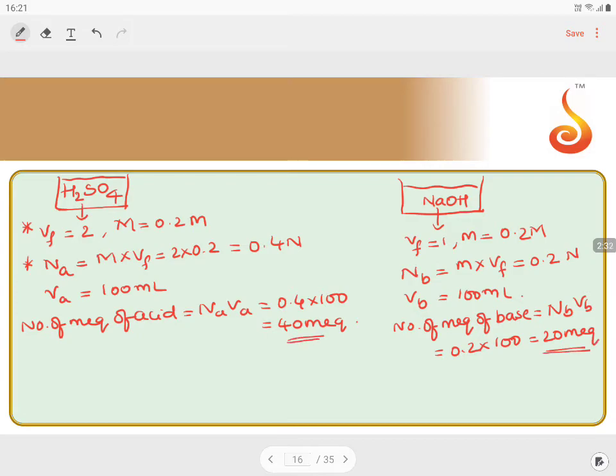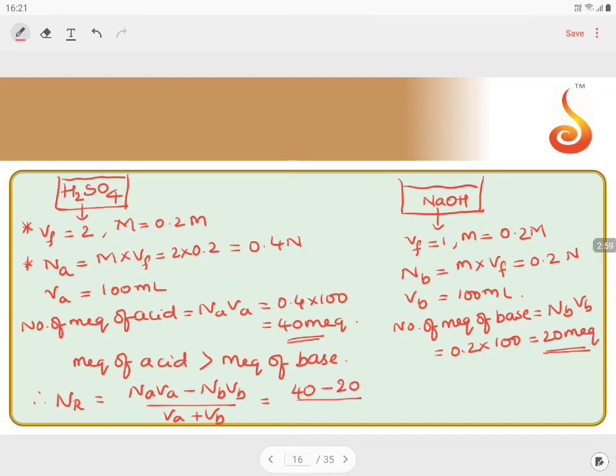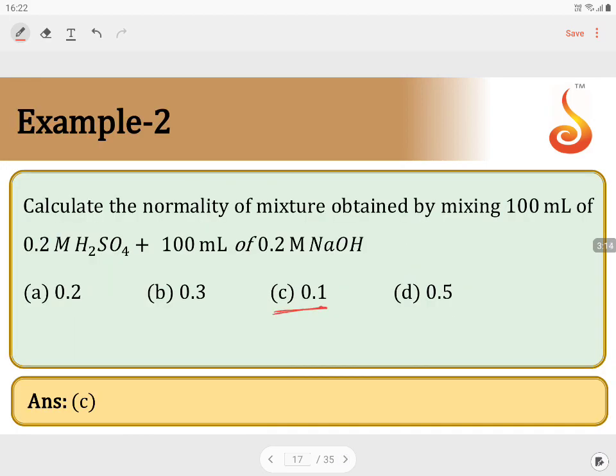So if you observe this, milliequivalents of acid is greater than milliequivalents of base. Therefore, the resultant normality of the solution is taken as NA times VA minus NB times VB by VA plus VB, which is equals to 40 minus 20 by 100 plus 100, 200. 20 by 200, which is equals to 0.1 normal. So the resultant normality of the solution becomes 0.1 normal, option C.